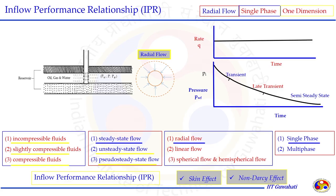Let us quickly recap what we did in the previous week. We established the inflow performance relationship for different conditions. The reservoir fluid can be broadly classified into four parts. First, the number of phases present in the reservoir. Second, the geometry — radial, linear, spherical, or hemispherical — mostly we discussed radial flow. Third, the type of fluid: incompressible, slightly compressible, or compressible — oil and gas fall within this classification. Fourth, the condition under which the reservoir fluid is produced, based on which we developed the IPR equation.